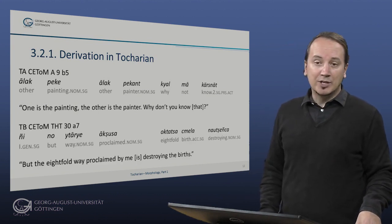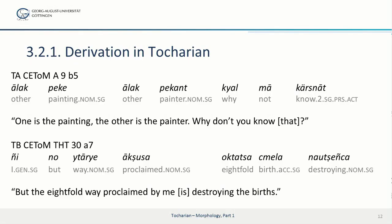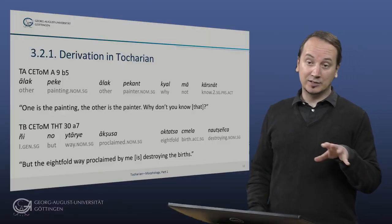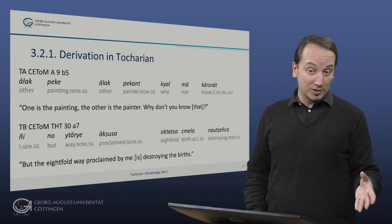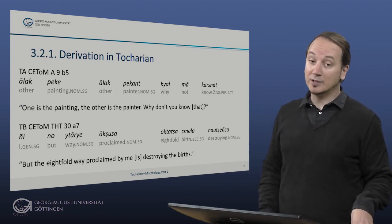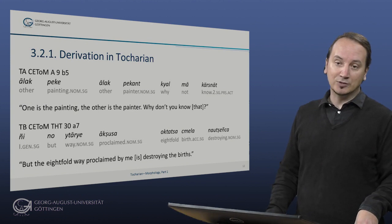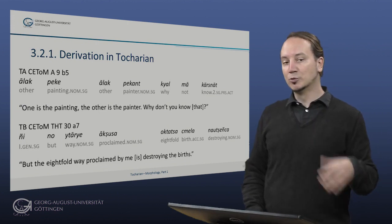The Tocharian B example is again from the Udana Lankara: 'the eightfold way proclaimed by me is destroying the births.' Here we have the abstract 'shmela' meaning birth, derived from the root 'tym' meaning to be born — a form we already encountered in the phonology session on palatalization — and 'nautchensha', the present participle of the causative present stem 'nautish', meaning to destroy or make disappear, built to the root 'naut' meaning to disappear.